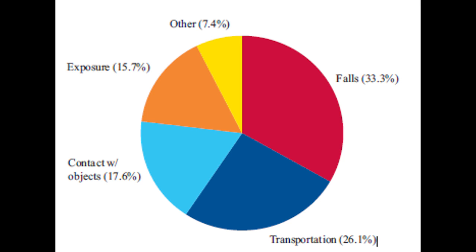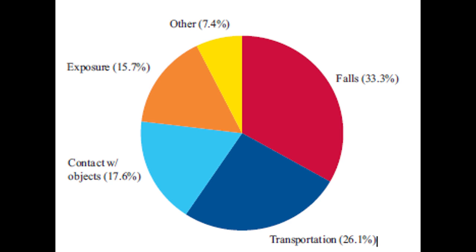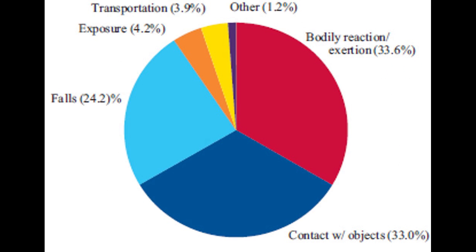This pie chart represents the distribution of leading causes of fatalities in construction. It is important to notice that fatalities from falls are the greatest, at 33 percent. Looking more in depth at fatalities caused by falls, the next pie chart shows that most of these fatalities are from individuals falling from roofs, ladders, or scaffolds.